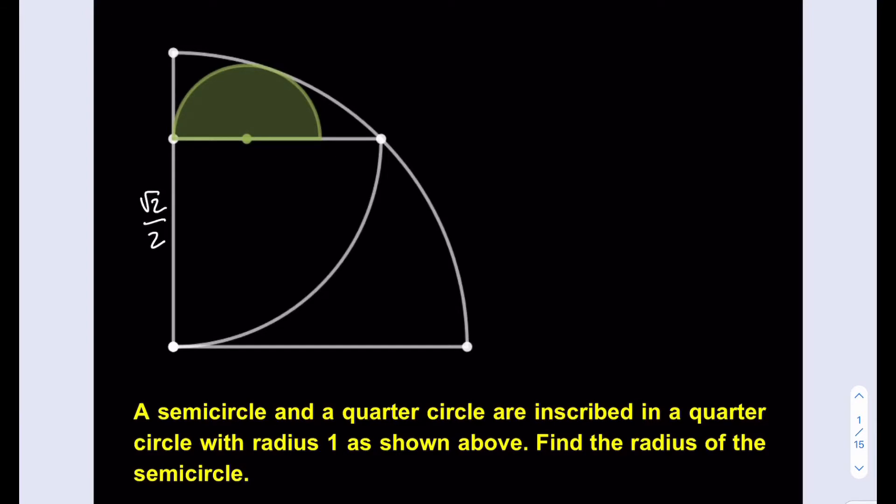So let's go ahead and make our crucial connection here. I'm going to connect the center of the quarter circle to the center of the semicircle. Now let's call this radius r, what we're trying to find, the radius of the semicircle.